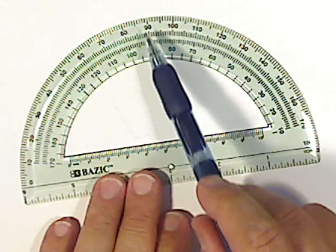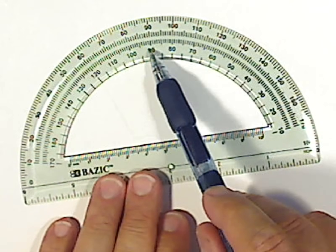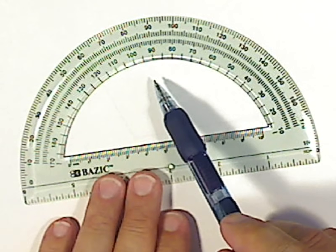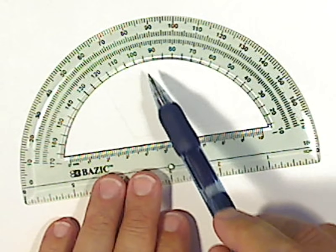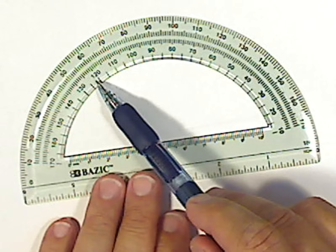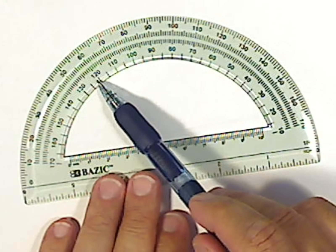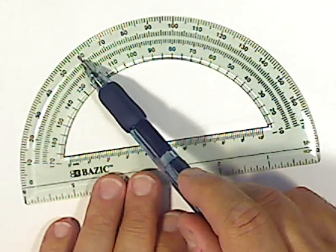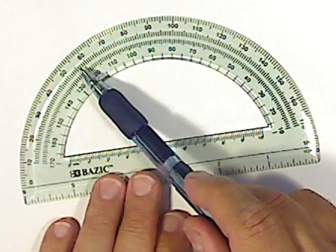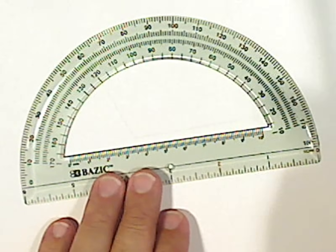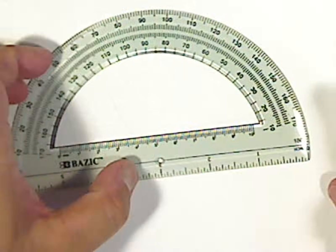You'll notice there's two sets of numbers. You use the number that represents your angle. So if I'm over here at 120, that will be if it's an obtuse angle, and 60 across from the 120 will be if it's acute. So knowing that, let's try to measure an angle.